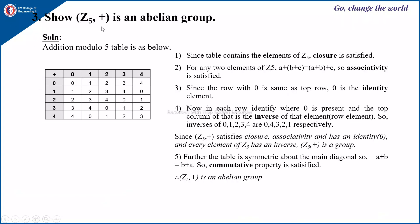Next, show that Z5 with addition is an abelian group. Z5 is the set of integers modulo 5, which is {0, 1, 2, 3, 4}, and the operation is addition. First, we write the modulo 5 addition table. The row elements and column headings are 0 through 4. For example: 0+0=0, 0+1=1, …, 1+4=5 and 5 mod 5 equals 0; 2+3=5 and 5 mod 5 equals 0; 2+4=6 and 6 mod 5 equals 1.